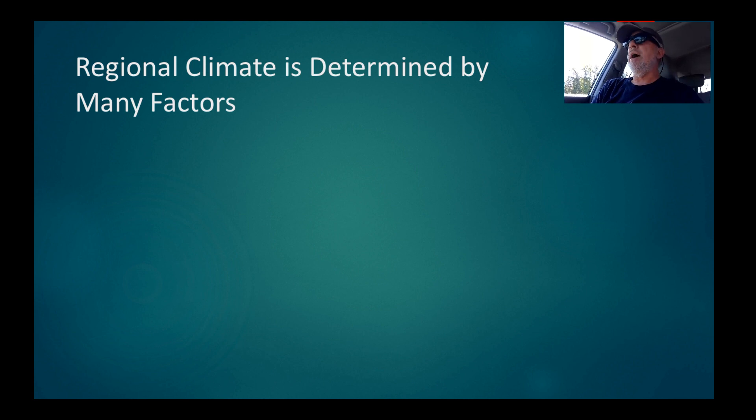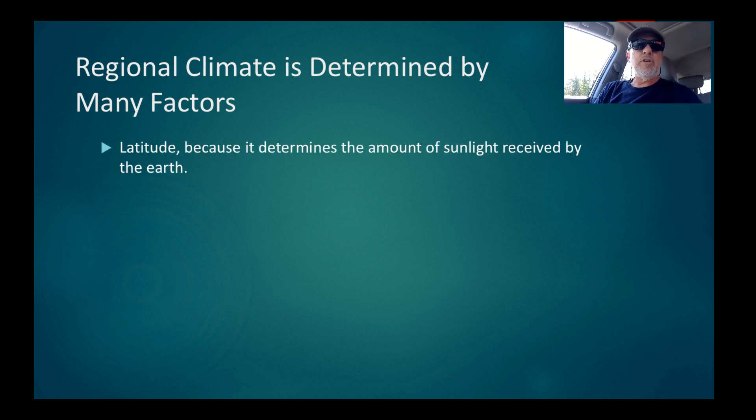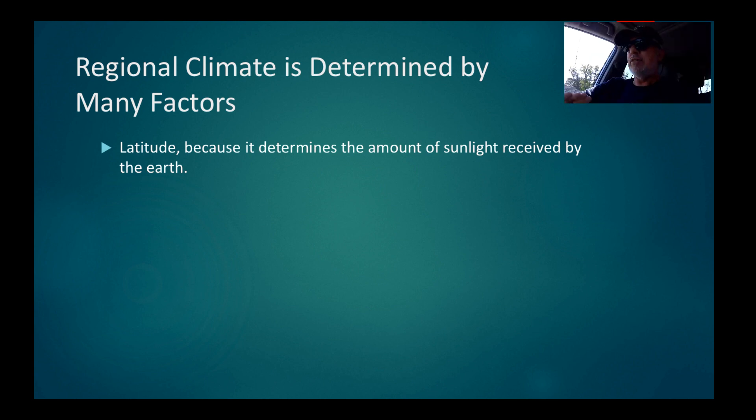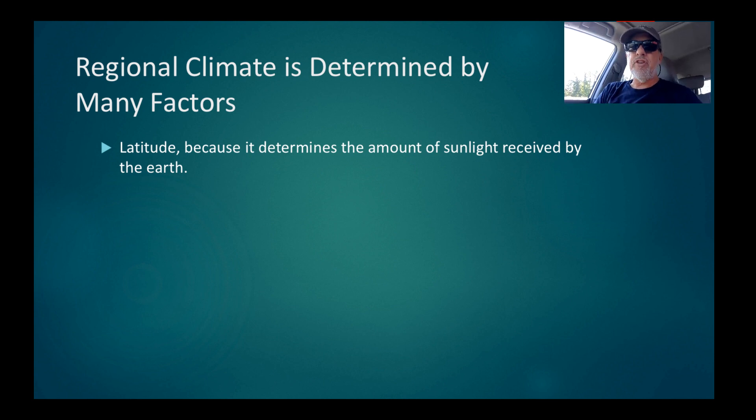Regional climate, what actually happens in a given region, is determined by many factors. One is latitude. Latitude is the angle between the plane of the equator and where you are on Earth. Latitude is important because it determines the amount of sunlight received by the Earth at any given time of the year.